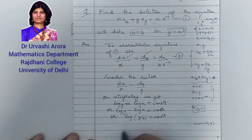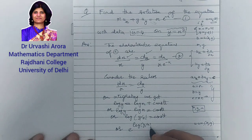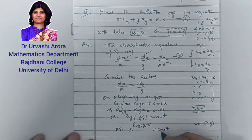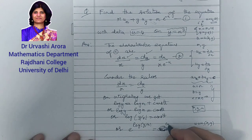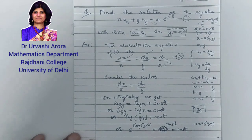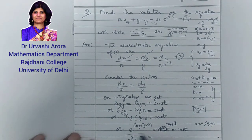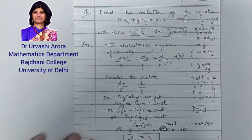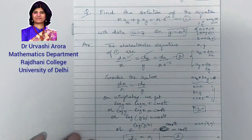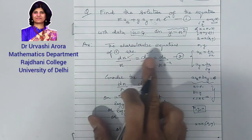Raising both sides as an exponent of e: e^(log(y/x)) = constant, and e to the power of a constant is again a constant. Since e^(log(y/x)) = y/x, we get y/x = c₁. This is the first integral, which I am marking as equation 3.